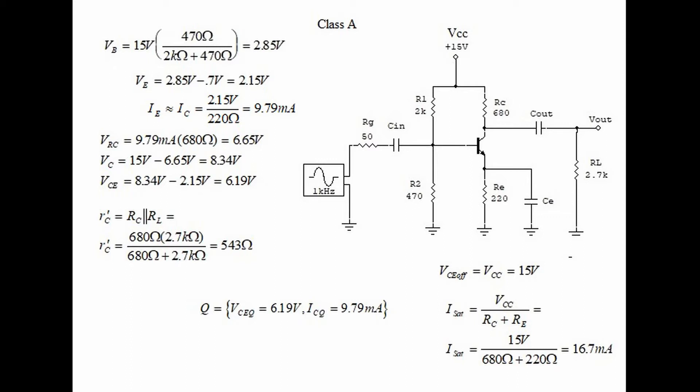What we have done with these calculations is to calculate the Q point. The Q point consists of VCEQ which equals 6.19 volts and ICQ which equals 9.79 milliamps. The Q means the quiescent point.